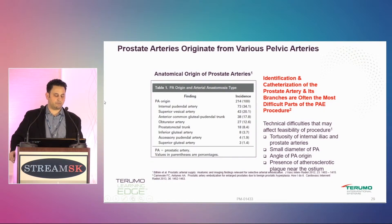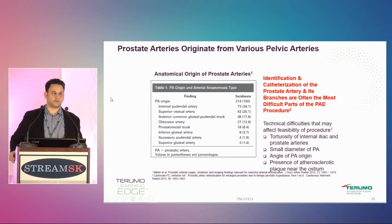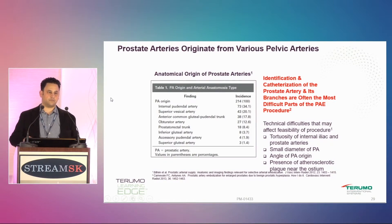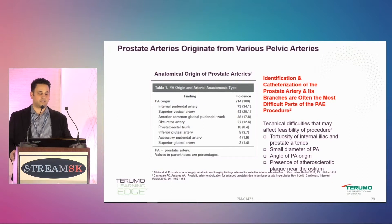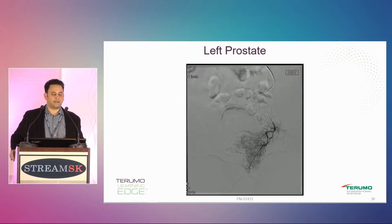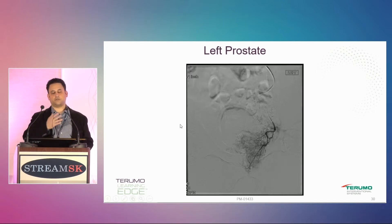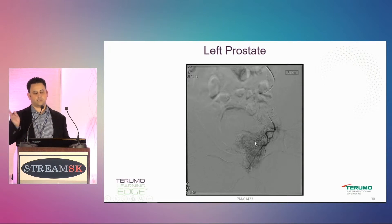Here's a summary of where these prostate arteries come from and their variability. The hardest part of these procedures is actually just identifying the prostate artery, which is why I hope these lectures are helpful. The more you see what normal things look like, the more comfortable you'll feel. You have to go through lectures and just recognize: these are all the branches, these four things going anterior, and it's going to be somewhere in between those.